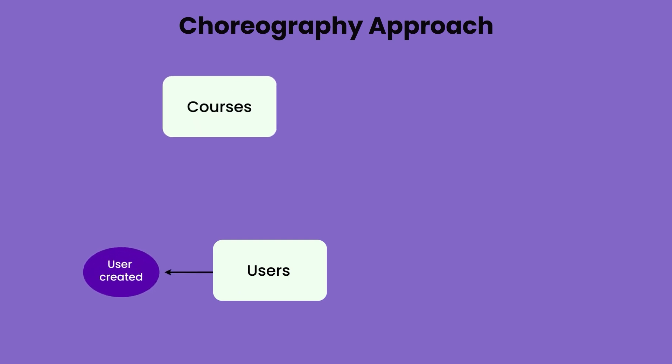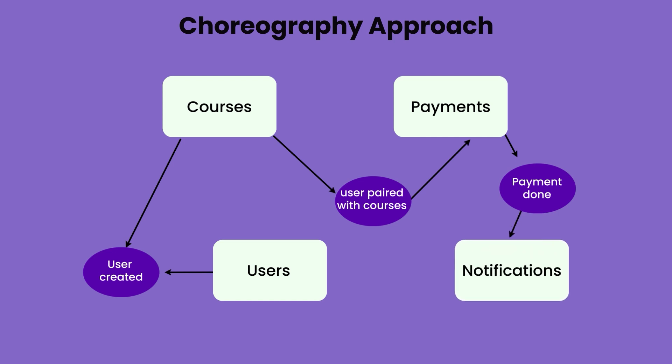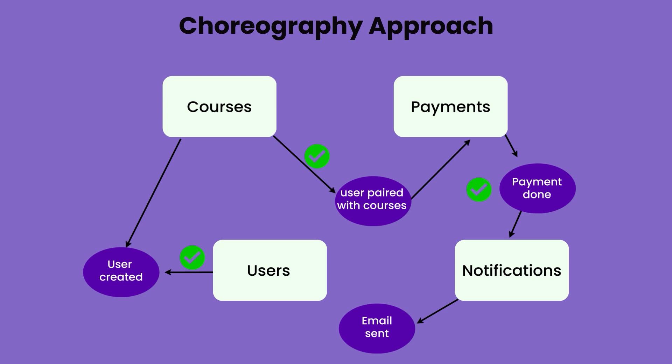In the choreography approach, it is just like event-based architecture. There is no controller or orchestrator — all services are independent and depend only on events. The user service emits a user-created event; the course service reacts to that event and pairs courses to the user; the courses service then emits an event that the user is paired with courses; the payment service consumes that event to take payment; once done, it emits a payment-done event; and the notification service consumes that event and sends the email. None of these services act as a commander — they simply emit events and react to them to complete the whole business flow.